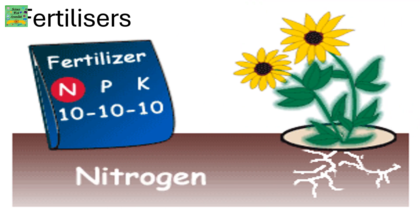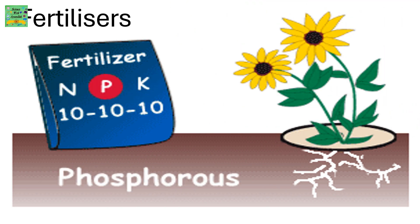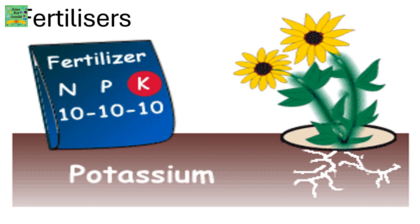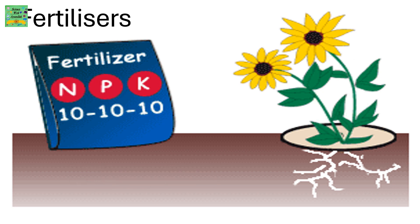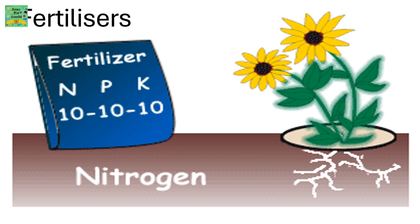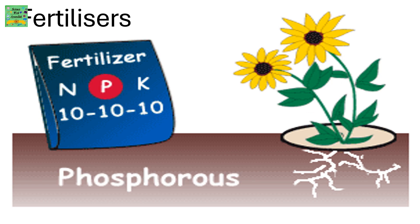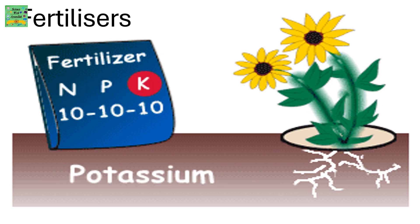Fertilizers. Fertilizers are substances that are given to plants for their healthier growth. They contain certain minerals that are very essential for plant growth. For example, they contain nitrogen, phosphorus, and potassium.